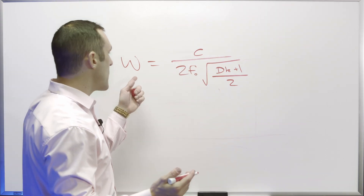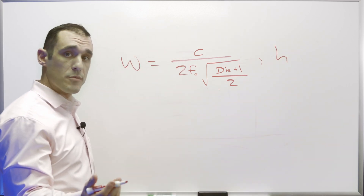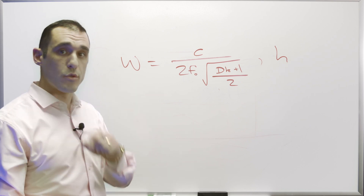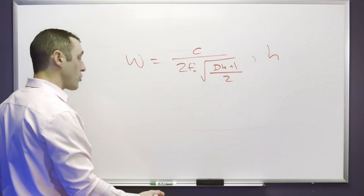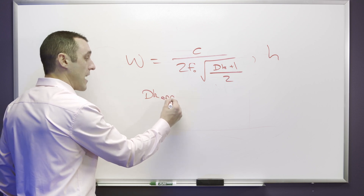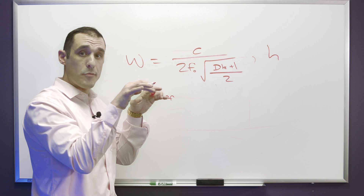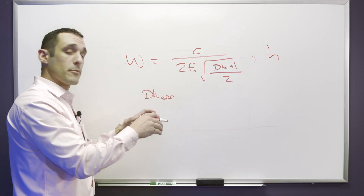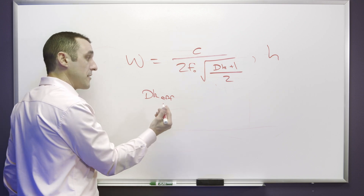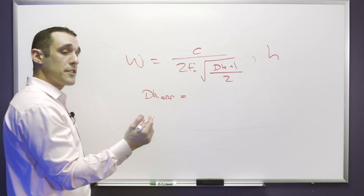Next we use W and the substrate thickness H to calculate the length of the patch antenna. But there's one other quantity we need first: the effective DK value. Because this is a patch antenna on the surface layer of a PCB, there will be fringing fields around it, and those define an effective DK value which we then use to calculate the length.